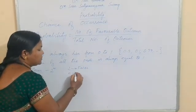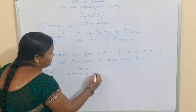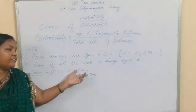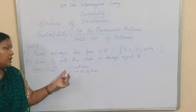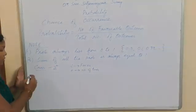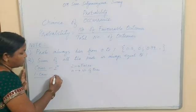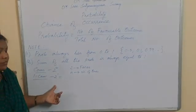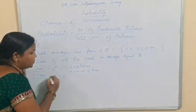Here, n means the total number of times the coin is tossed. 2 means the number of faces — that is Head and Tail. If you toss only 1 coin, then the formula becomes 2 to the power of 1. 2 to the power of 1 means we take 2 one time, which equals 2.